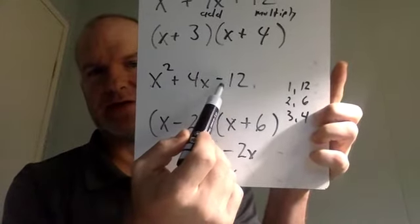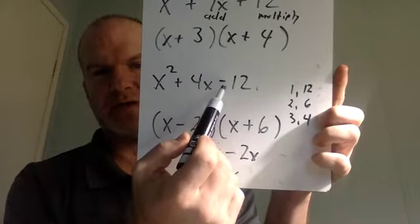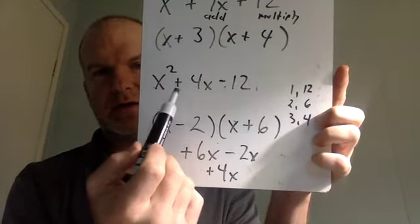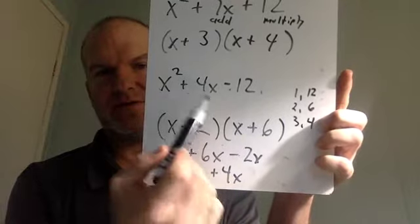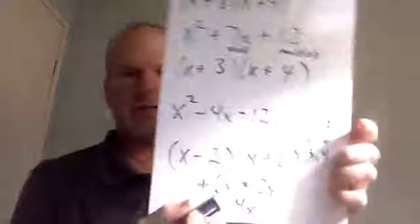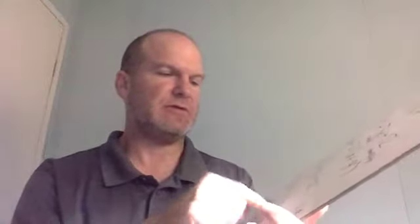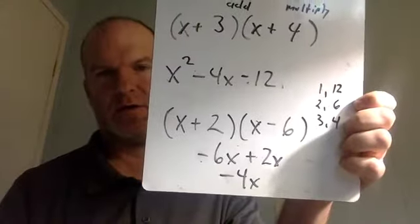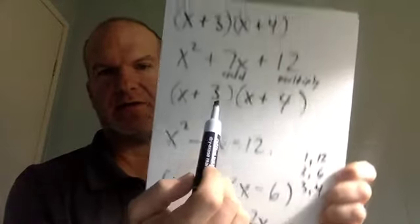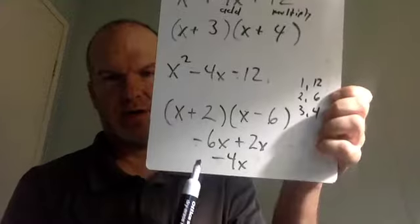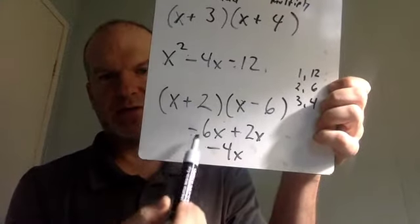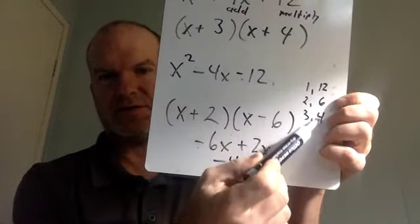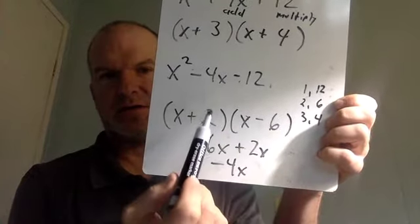If the last term is negative, you're subtracting — using one positive and one negative. And whichever sign the middle term has, that's the sign of your bigger number. If the middle term is positive, the bigger number is positive. If the middle term is negative, the bigger number must be the negative one.